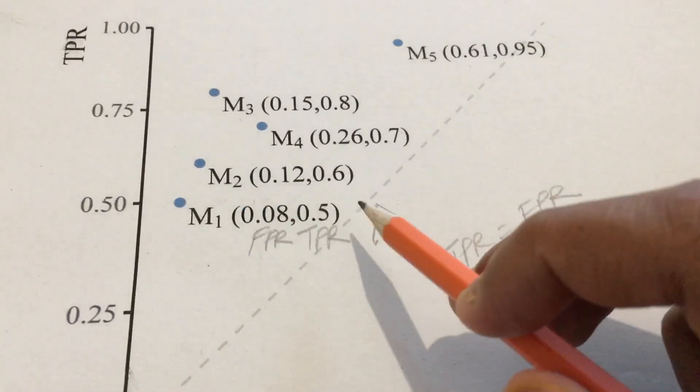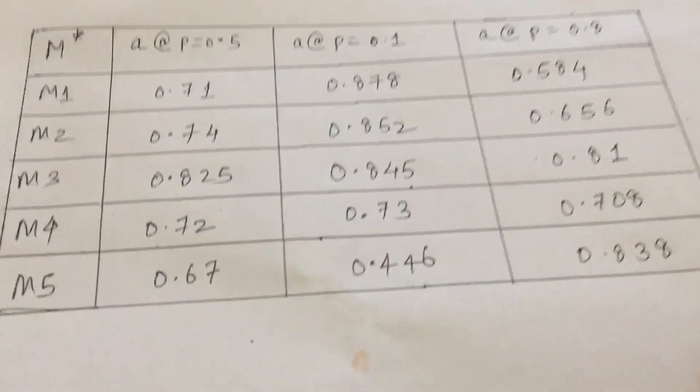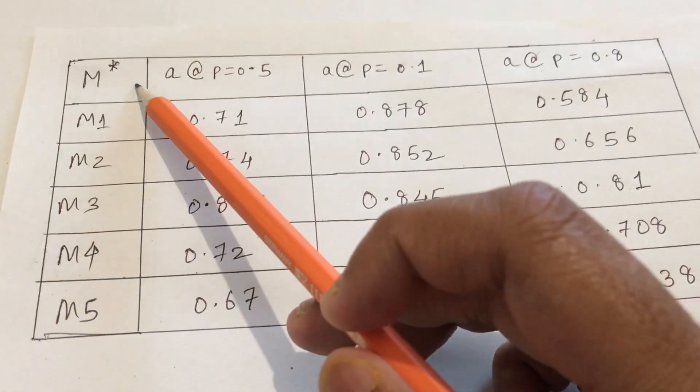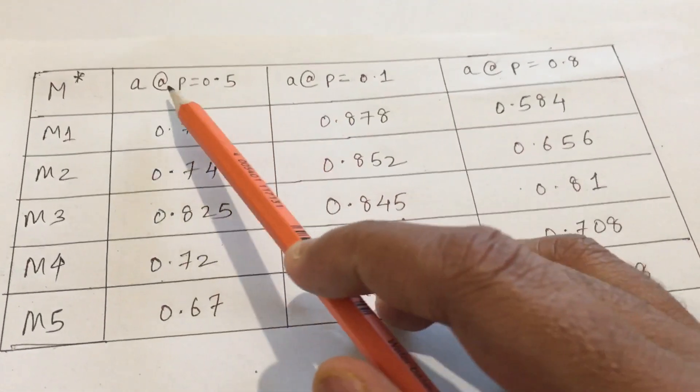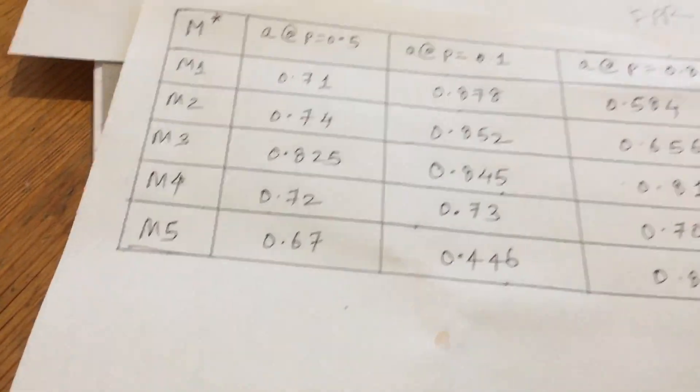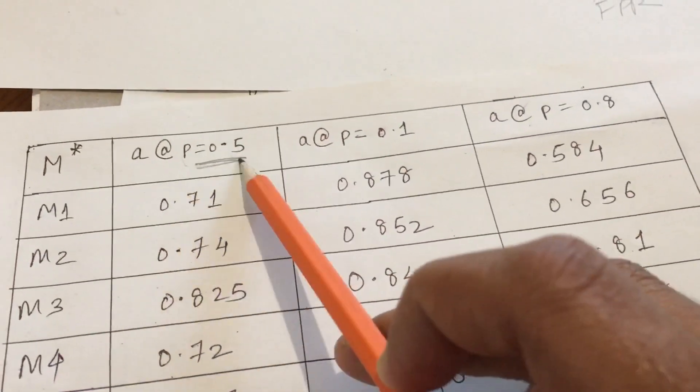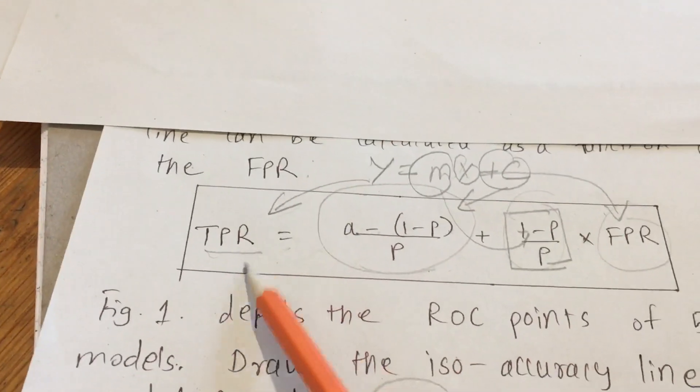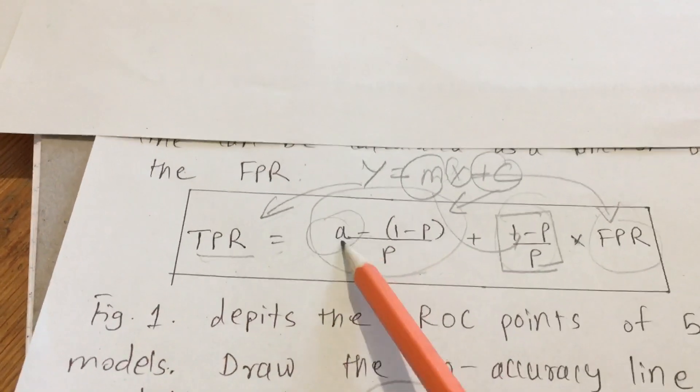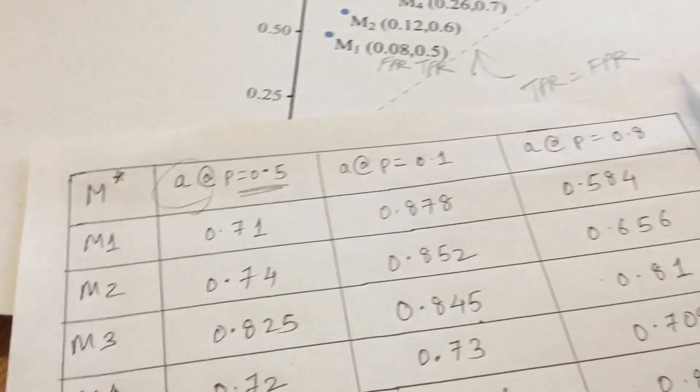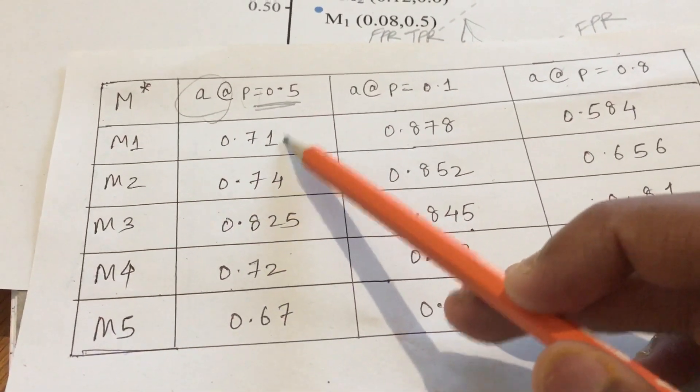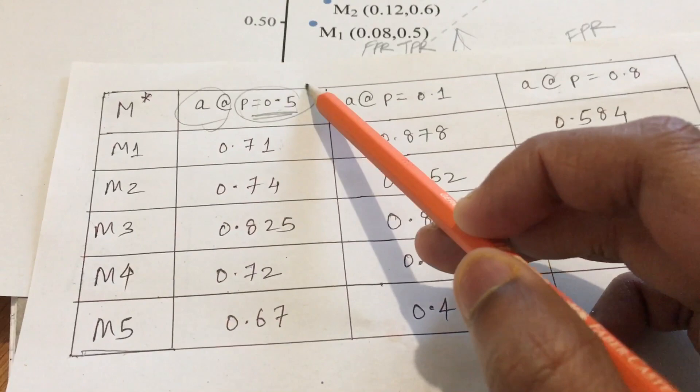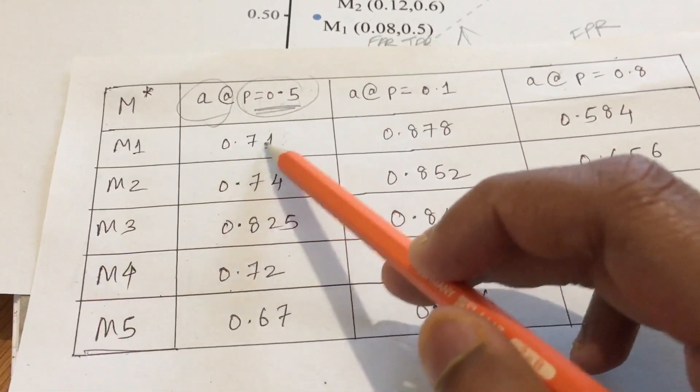I have made one table. In this I have all the models, that is M star, M1 to M5, and for each of this I need to calculate. How will you calculate this? You have this P value which is given and you need to calculate the A value for it, that is the accuracy. In this equation I will input each of the values and for each value I will calculate the A.